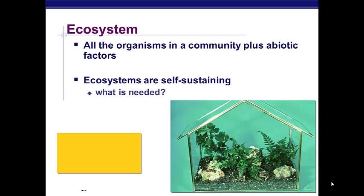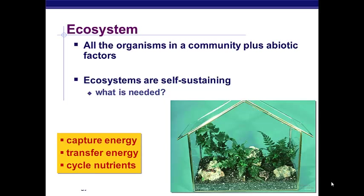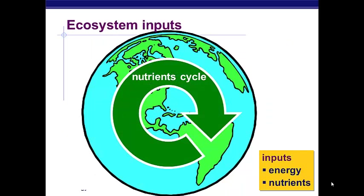Ecosystems are self-sustaining, like this terrarium. They do need some things in order to sustain themselves. First, they need to be able to capture energy and transfer it through the ecosystem, from the plants to the organisms, etc. Also, the nutrients in this ecosystem need to be able to cycle. The carbon, the nitrogen, the water — all need to be reused over and over again. So the nutrients in an ecosystem cycle.